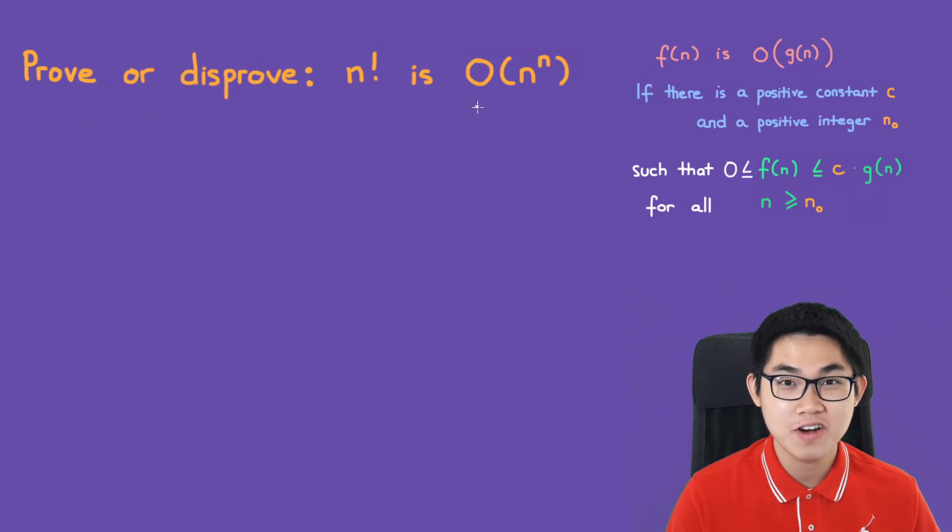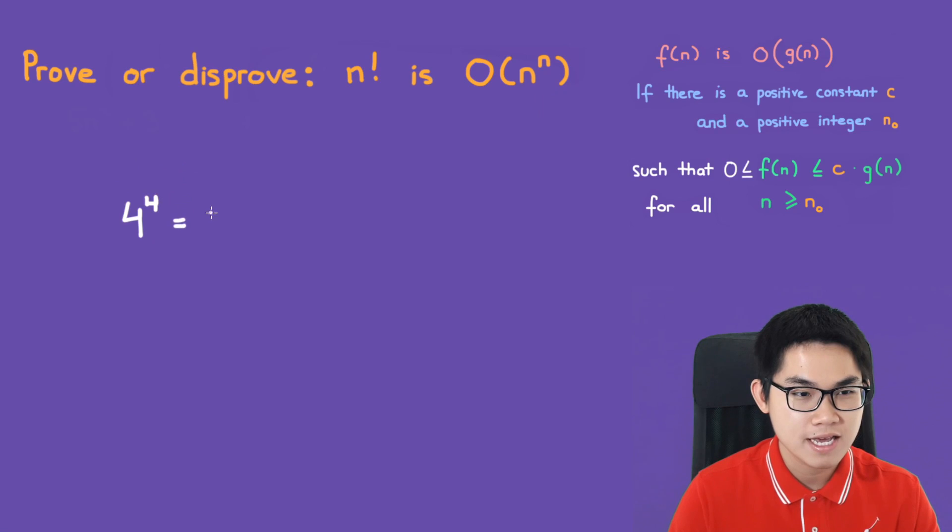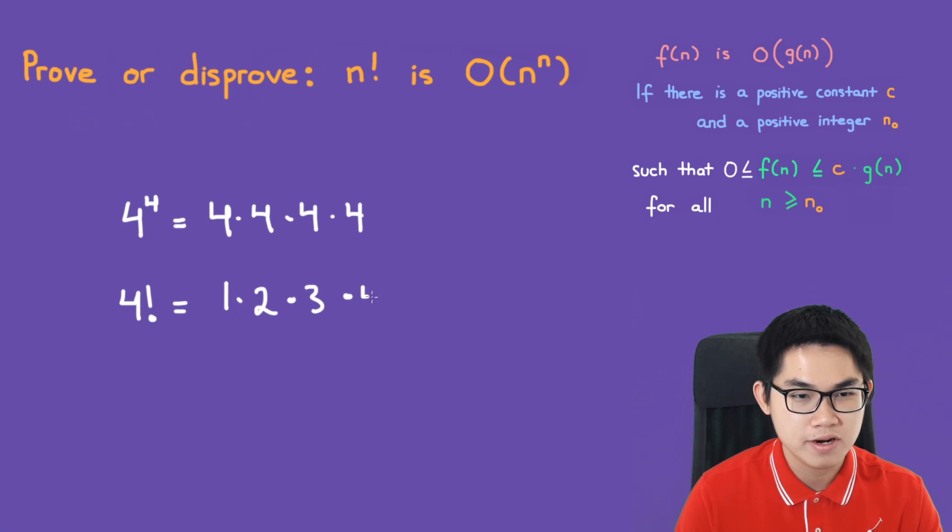Just looking at these two functions, it's easy to tell that this one grows faster. If n is 4, 4 to the power of 4 is 4 times 4 times 4 times 4, whereas 4 factorial will be 1 times 2 times 3 times 4. So it's obvious that n to the power of n grows faster than n factorial.